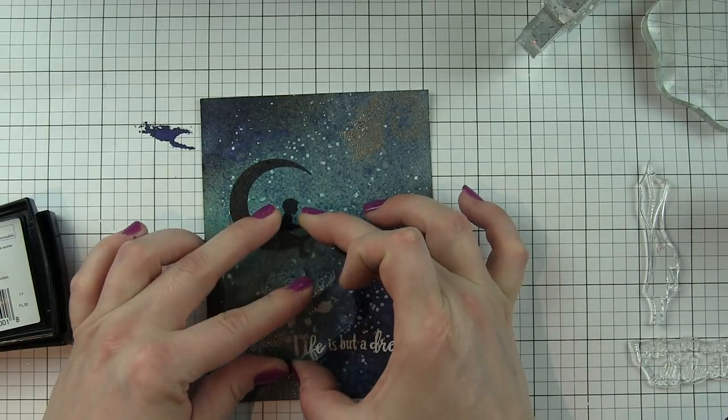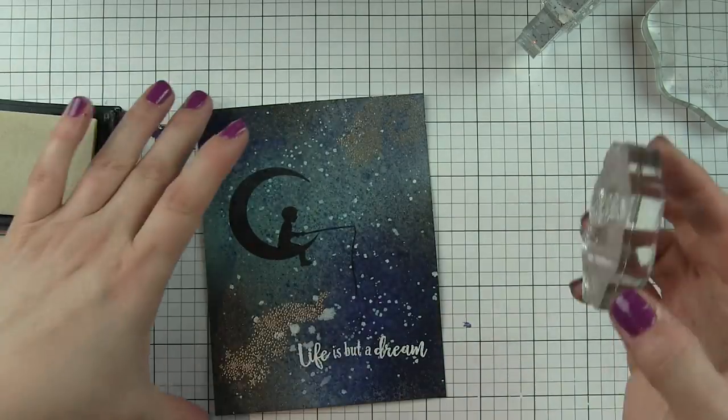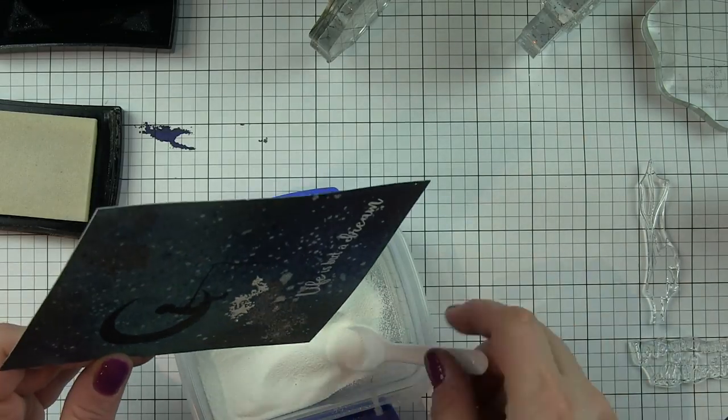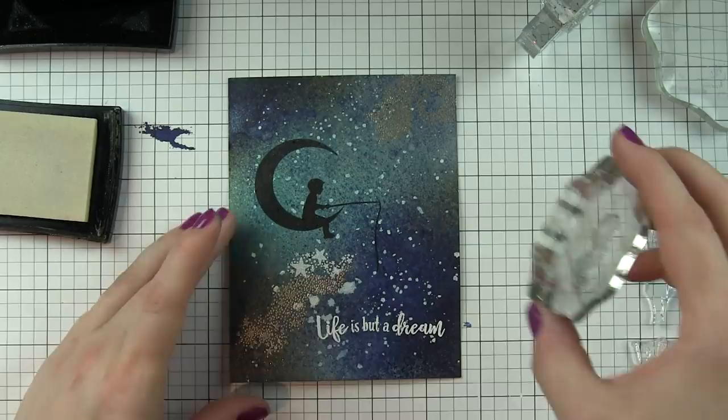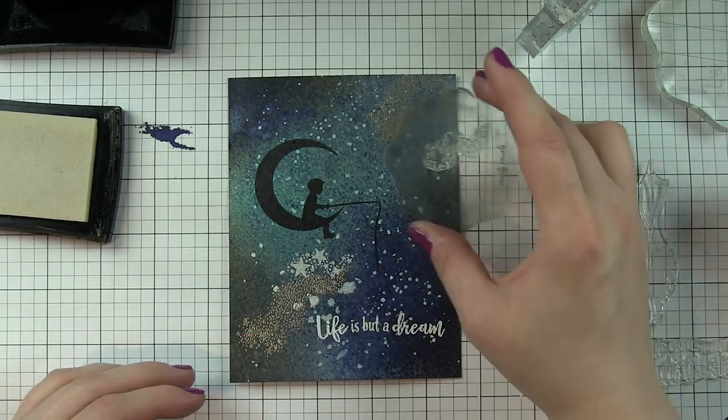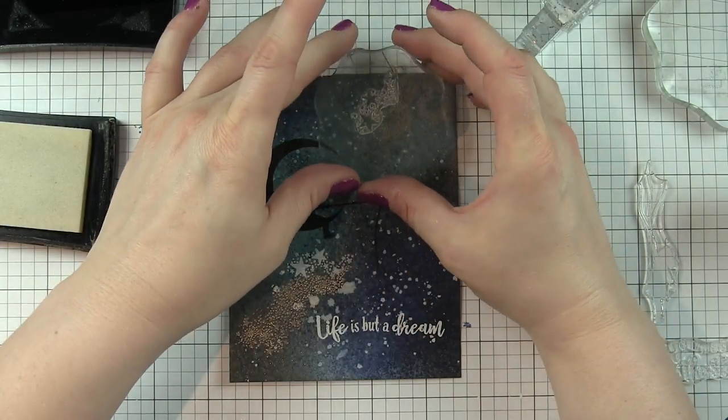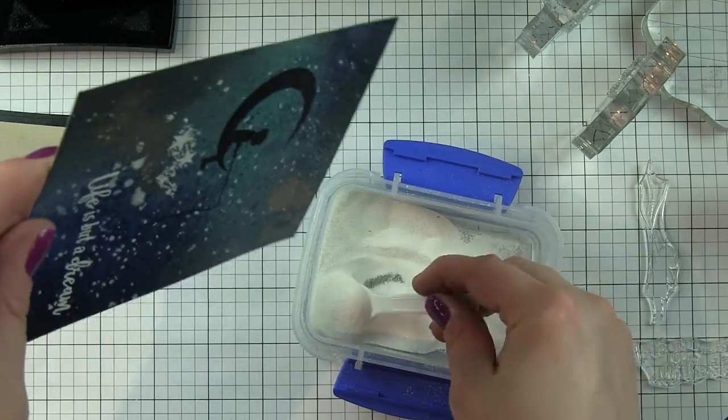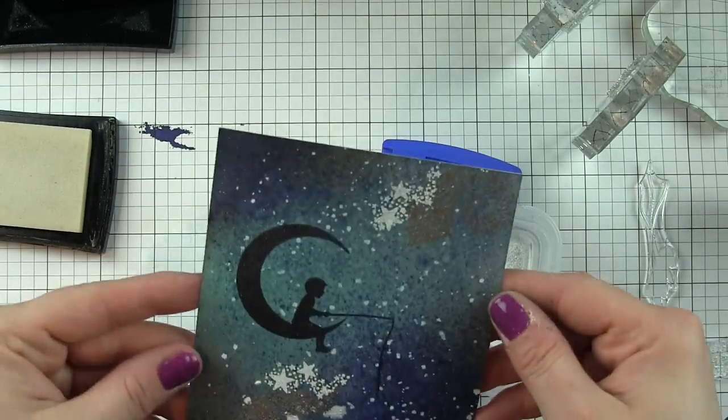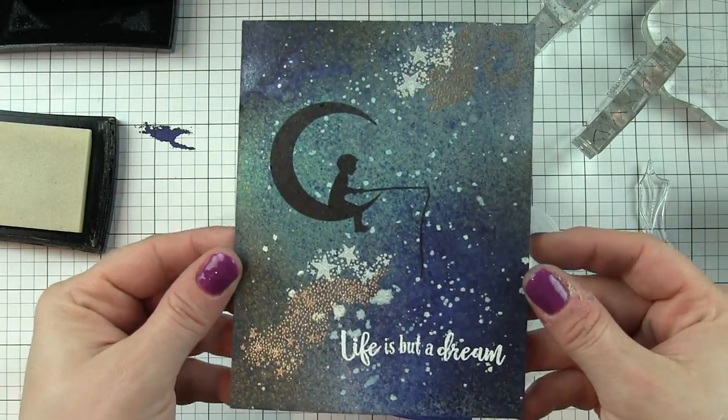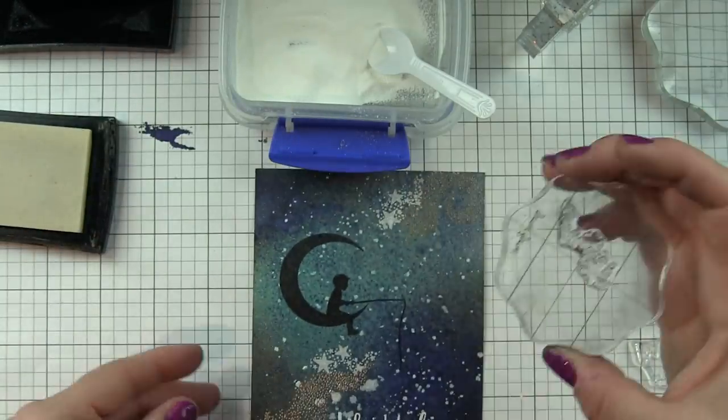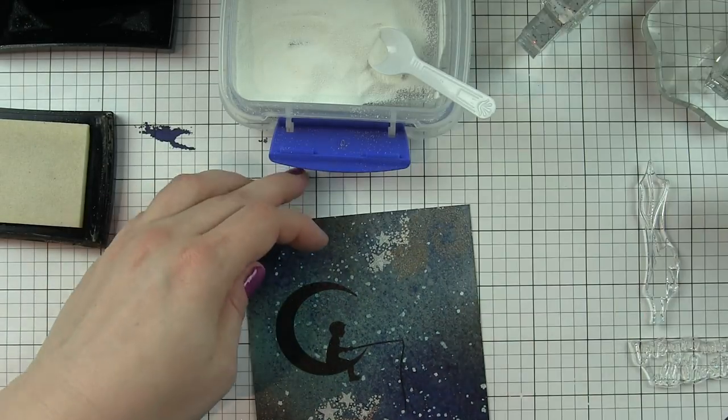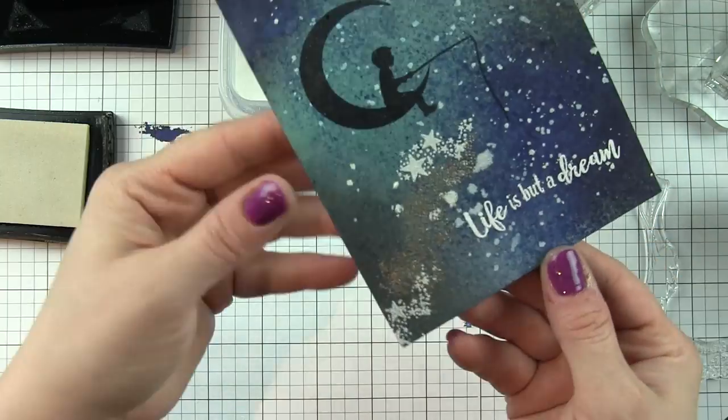From here it's simply filling in with the additional images. All three cards were created the same. I just use different silhouette children images on each and a different greeting on each, but they are all white embossed greetings, black silhouette images against this night sky background. These are some of the images that are going to be stamped and embossed with white. You can see that overlap. I love the overlap of the two embossing powders. It really builds that night sky image, adds tons of interest, is super fun.